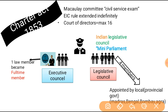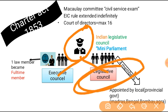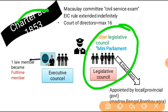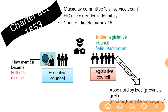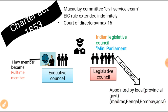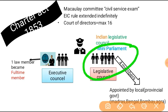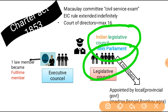The law member who was added as the fourth member of the executive council now became a full-time member. Indian Legislative Council: the Governor General of India would now have both an executive council and a legislative council — this is the most important point of Charter Act 1853. This legislative council was like a mini parliament, with 6 members, of which 4 would be appointed by local provincial governments — Madras, Bengal, Bombay, and Agra. This is where the concept of parliament originated in India, as a copy of the British Parliament.